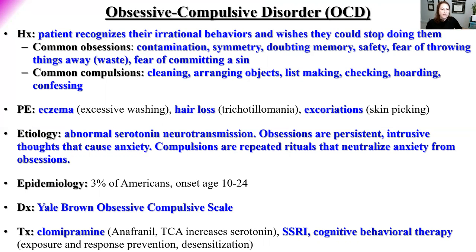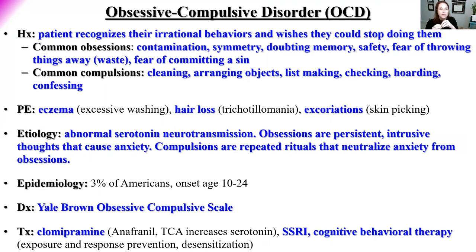About 3% of Americans have OCD, with onset starting around age 10, commonly seen in the teens to twenties. The Yale-Brown Obsessive Compulsive Scale is commonly used to help diagnose this. For this disorder and every disorder in this unit, behavioral therapy is just as important as medications. Cognitive behavioral therapy works synergistically with medication. Two medications used: clomipramine, a tricyclic antidepressant that increases serotonin, and SSRIs as first-line.